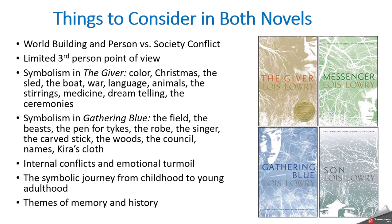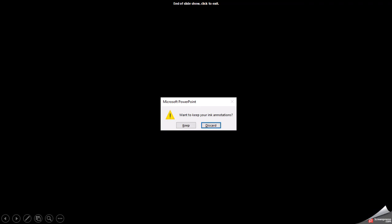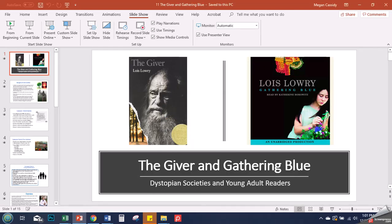Internal conflicts as well as person-versus-society conflicts, emotional turmoil, and that symbolic journey from childhood to young adulthood. Also themes of memory and history: who controls the memories, who controls the history, and how are those things being passed down? I really hope you have a chance to read Gathering Blue as well as The Giver. I put it on as recommended and you can do it for extra credit, but I really recommend that you read both — they're fascinating to compare and contrast. I look forward to reading what you guys have to say in our discussions and in your papers.